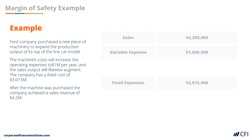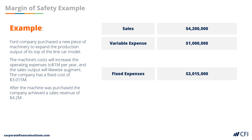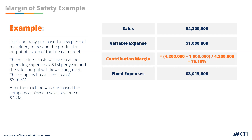In our example, the company has sales of $4.2 million, variable expenses of $1 million, and fixed expenses of $3.015 million. We need to start by calculating the contribution margin, which is sales minus variable expenses divided by sales. The contribution margin is equal to 76.19%.